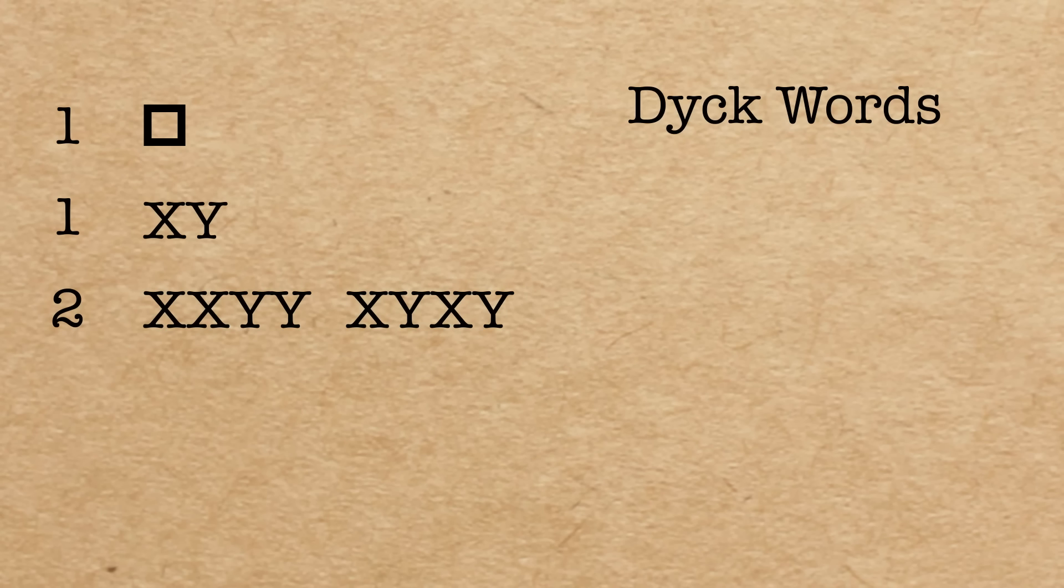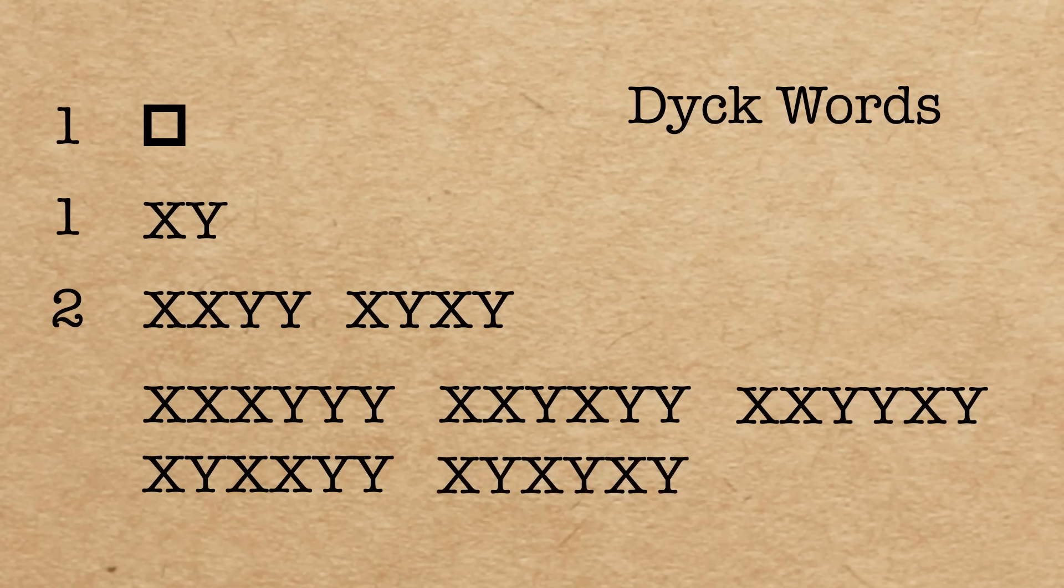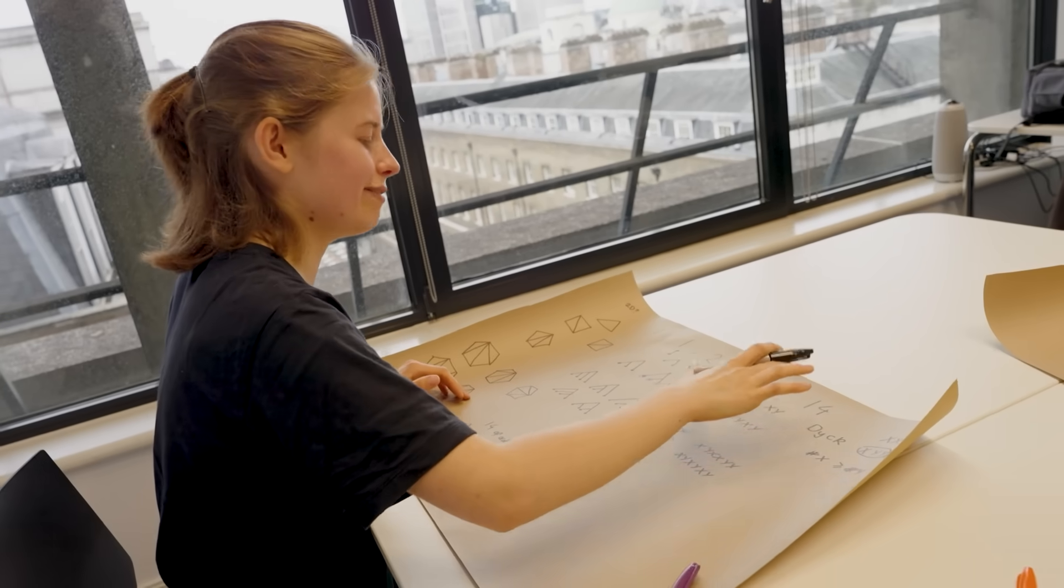Now what about with three of each? So we can have x x x y y y we could have x x y x y y. We could also actually have x x y y x y. How about x y x x y y. And then we can alternate we can have x y x y x y. Okay these are all the Dyck words with three x's and three y's. Now do you want to try guessing how many Dyck words there are with four x's and four y's? It's 14! So we've got this one one two five fourteen pattern again.